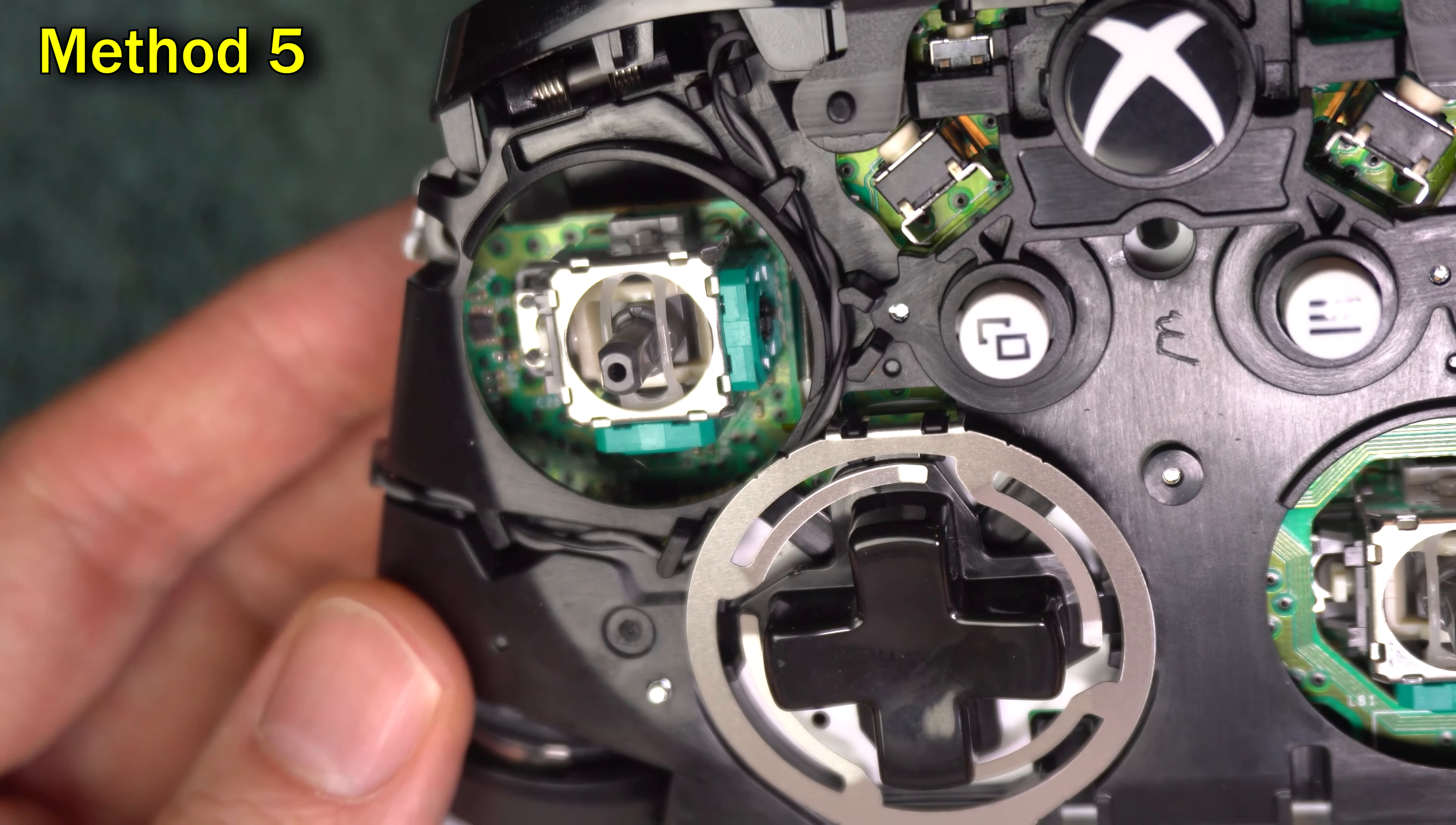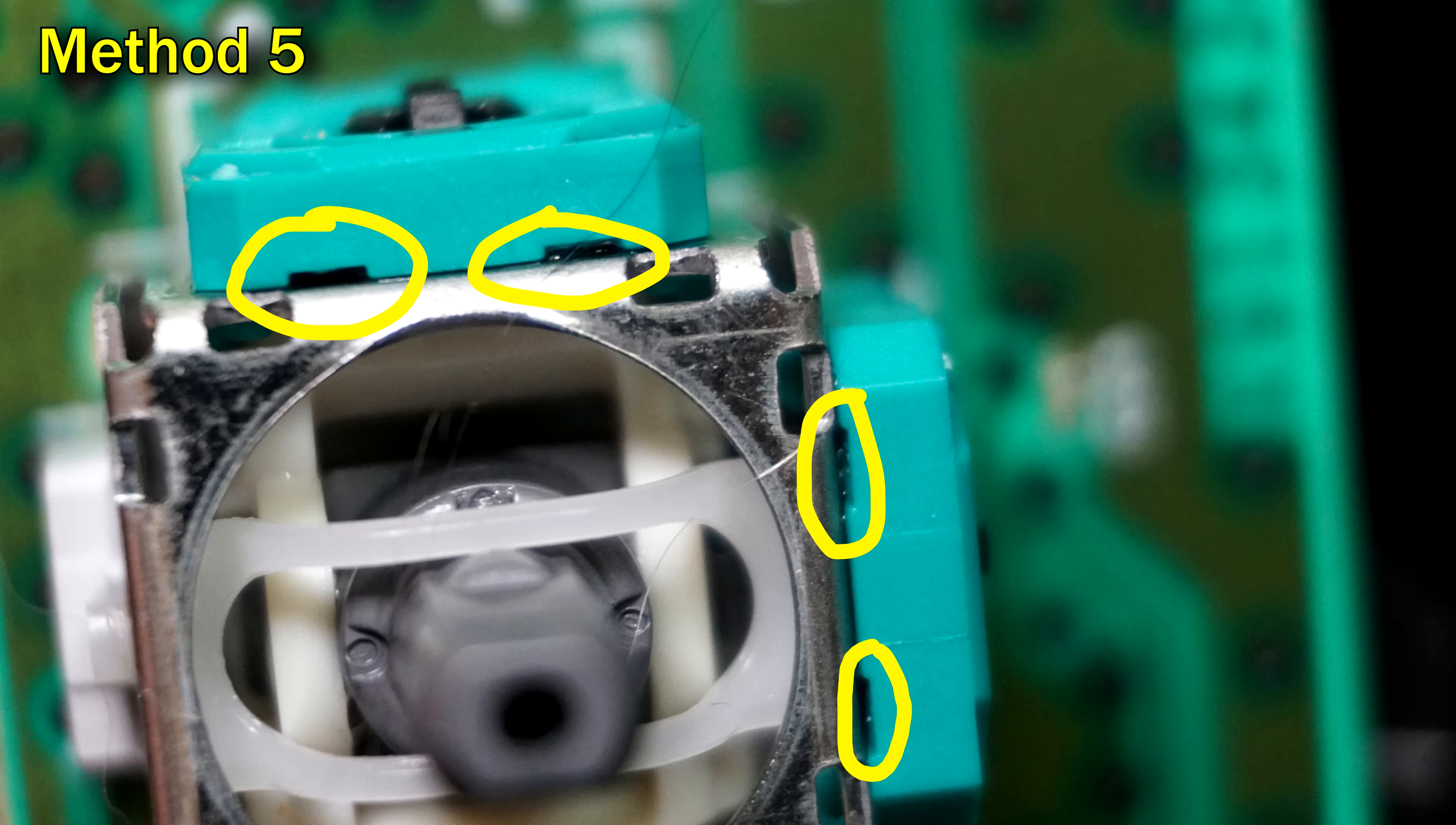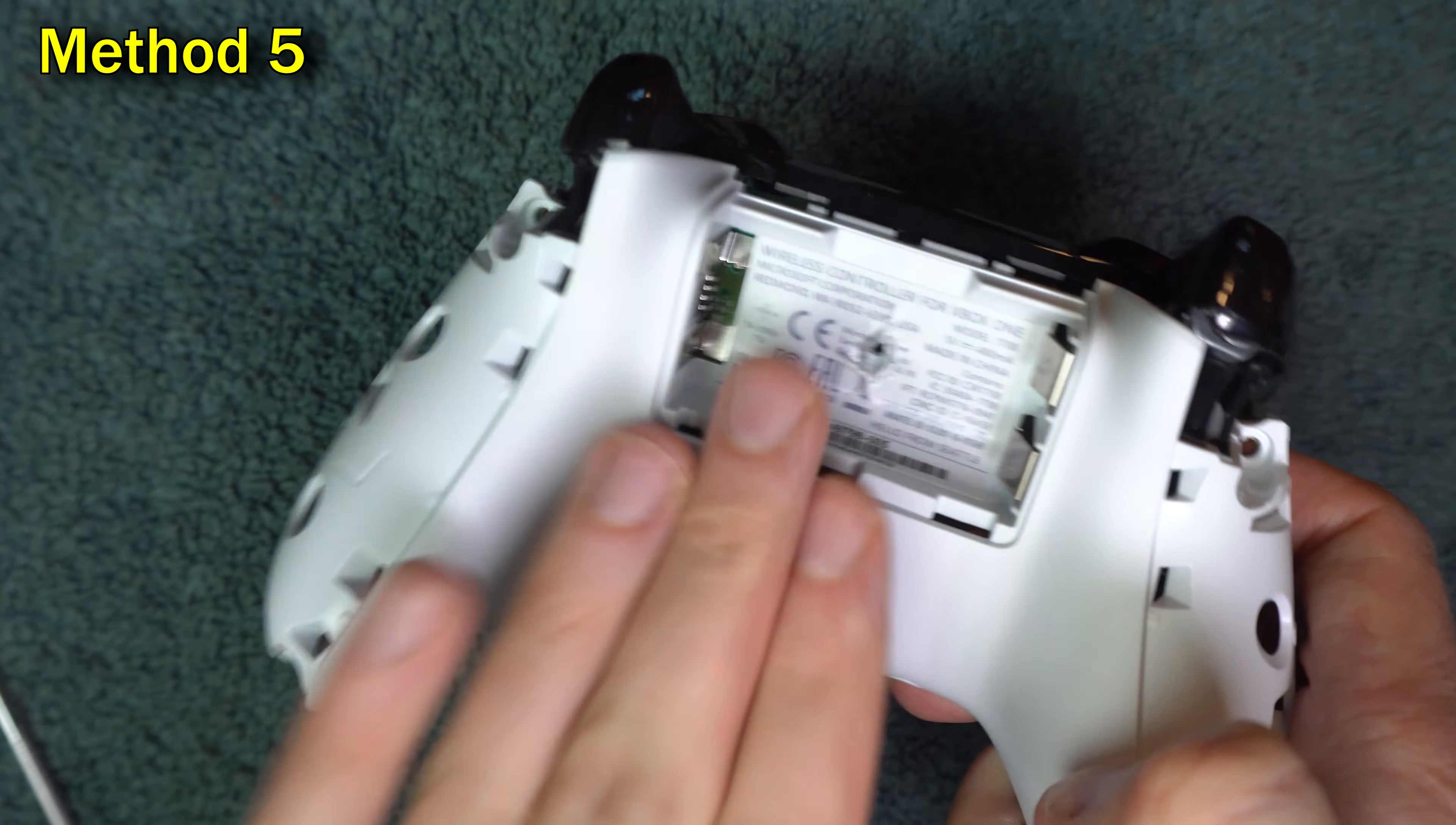You now have good access to the stick mechanism. A lot of things can fall into this mechanism and cause issues. So what you're going to do is just clean it up. Pay close attention to these four little slits. I'm going to come back to them in a minute. The first thing you want to do is turn the controller over and tap on it. If you have debris in there, hopefully this will knock it out.